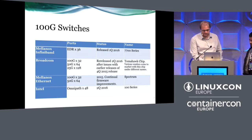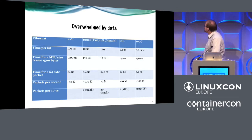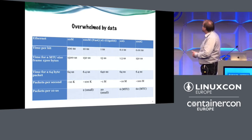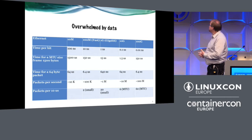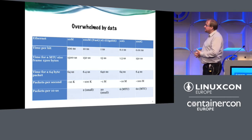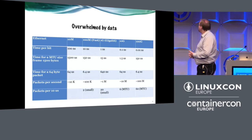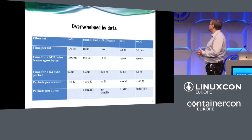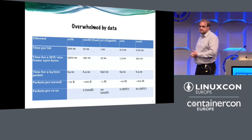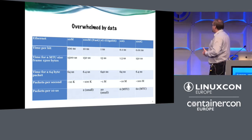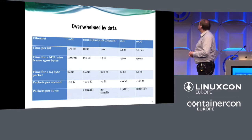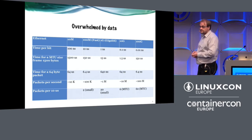Let's look at what we had before. At 10 megabits, there's about 100 nanoseconds per bit. To receive an MTU-sized frame of 1500 bytes takes 1.5 milliseconds. A 64-byte packet takes 64 microseconds, and you can receive about 10K packets per second — 64 microseconds is sufficient time to process a packet and send it back. That's what TCP/IP was designed for. Moving to 100 megabit, it's 10 nanoseconds per bit, 150 microseconds for a large packet, and you can receive 100K packets per second.